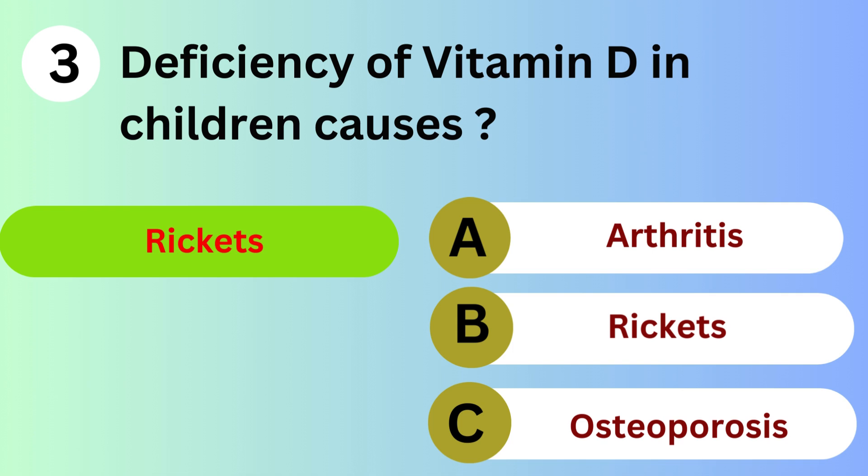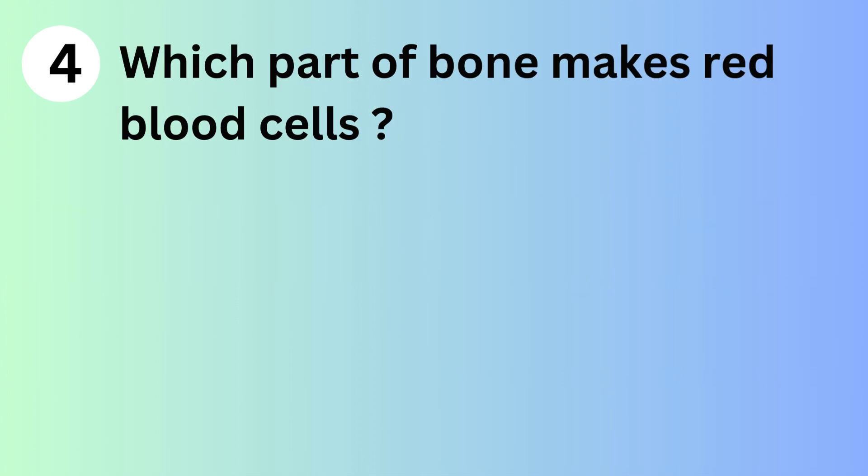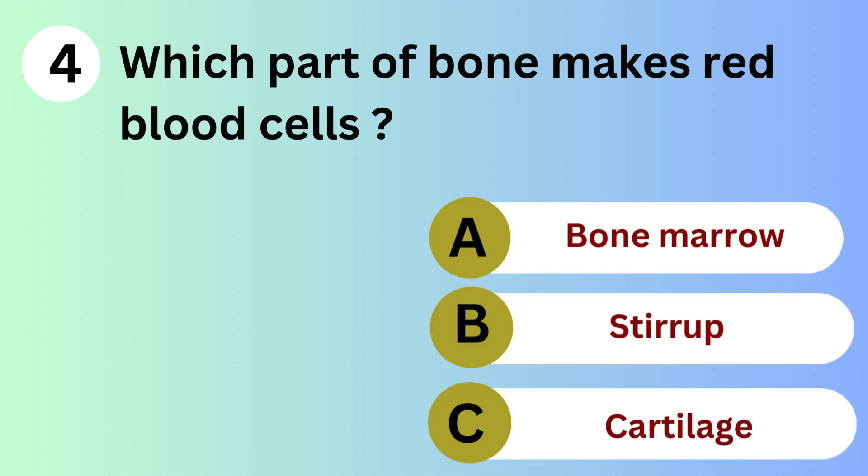Answer is B. Rickets. Which part of bone makes red blood cells? A. Bone marrow. B. Stirrup. C. Cartilage.